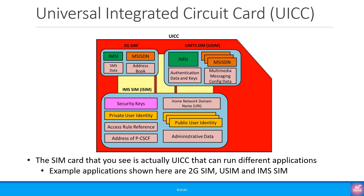Examples of applications on the UICC are 2G SIM, USIM and IMS SIM. It should be noted that USIM was initially called UMTS-SIM, but then the definition was later changed to Universal SIM to cater for 4G and future generations.